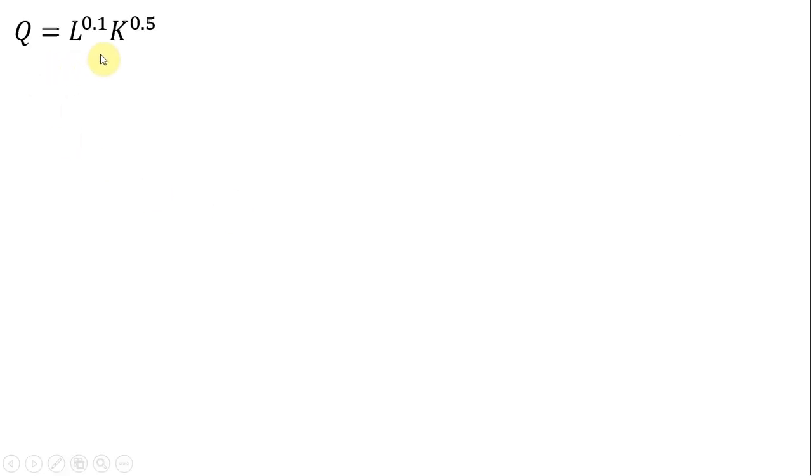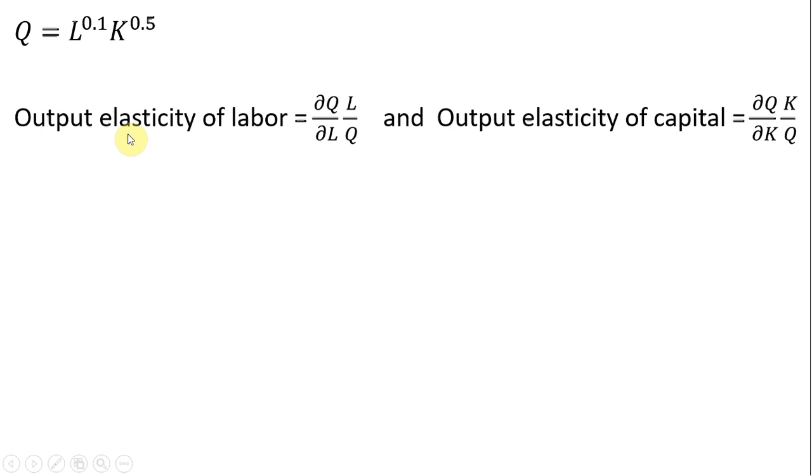Here's our Cobb-Douglas production function, and the output elasticity of labor is given by the partial derivative of the production function with respect to labor, multiplied by L divided by Q.